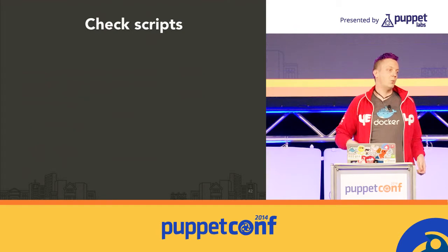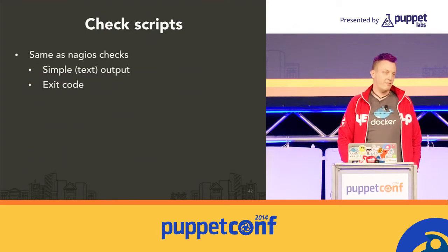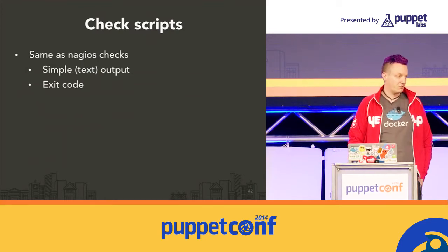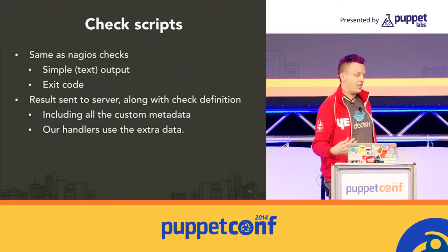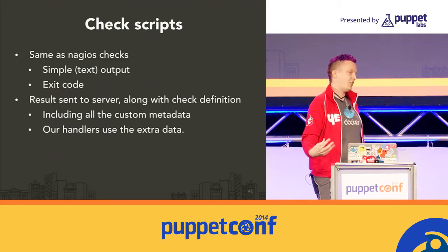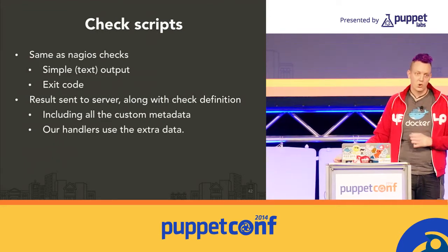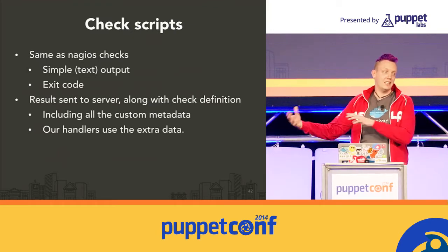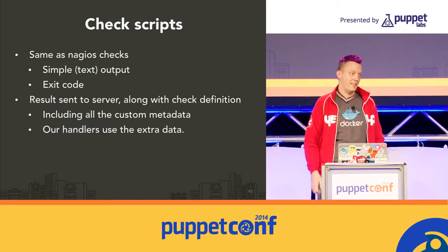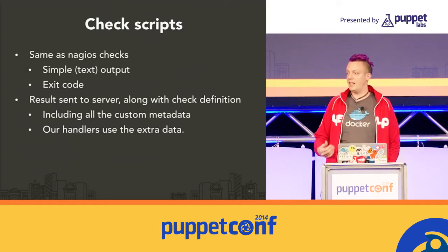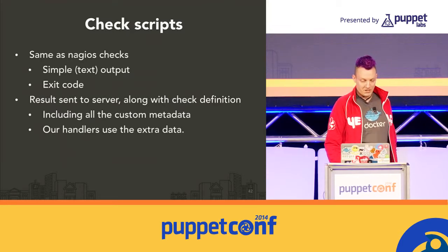When Sensu checks something, it basically just runs a script. They're really simple — like Nagios scripts, they just have a simple exit status. The interesting part is the client runs that check, takes the exit status and one line of output, adds that into all the check metadata, and sends all of that to the server. So the server gets the entire context, including all that metadata — allowing the server to know what project to raise the Jira ticket in, for example.